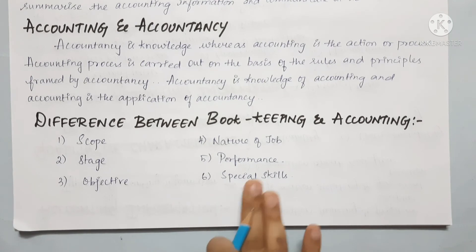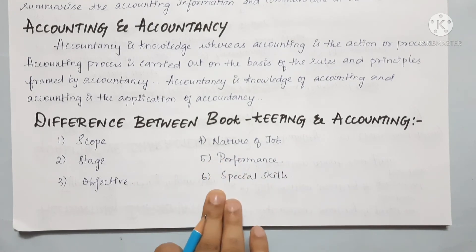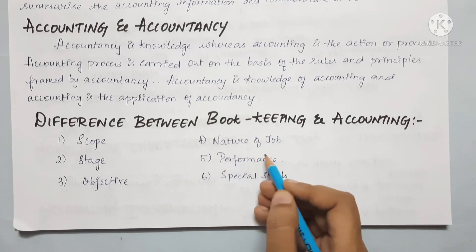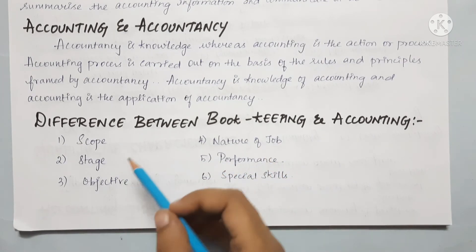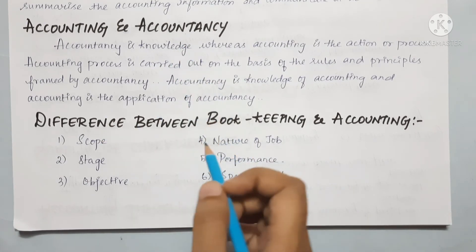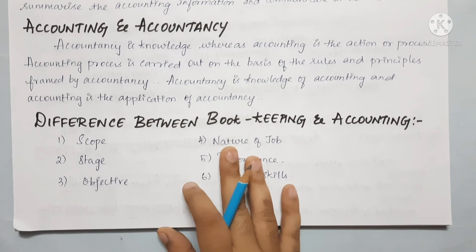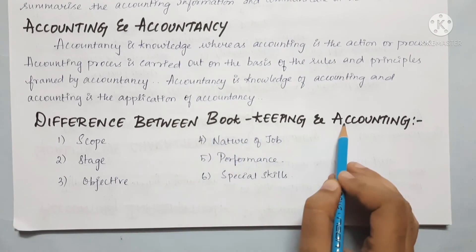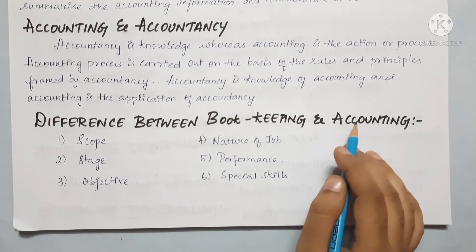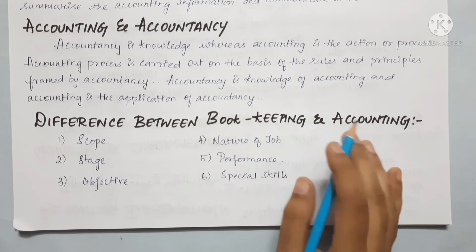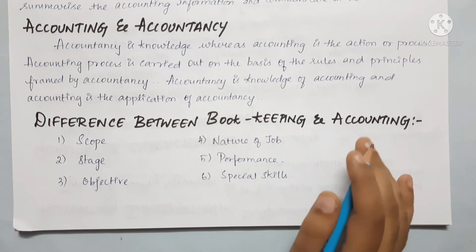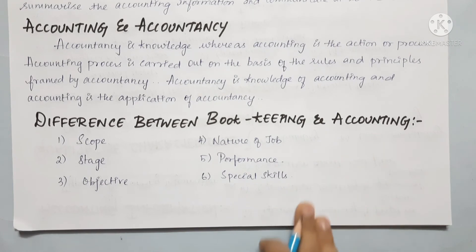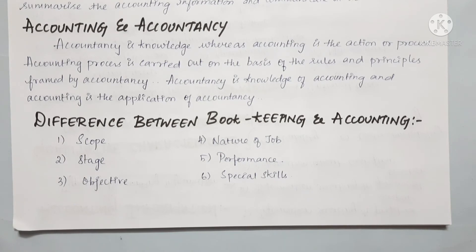Next, we will look at the differences between bookkeeping and accounting. There are six points: Scope, Stages, Objective, Nature of Job, Performance, and Special Skill. For Scope, bookkeeping involves identifying financial transactions and events, measuring them, recording and classifying. Accounting involves summarizing the recorded transactions and events, interpreting them, and communicating the results to users. So classifying is located in bookkeeping, while summarizing is located in accounting.